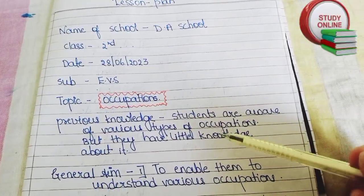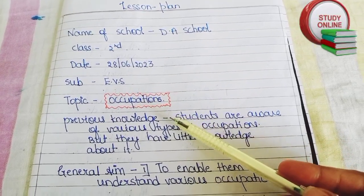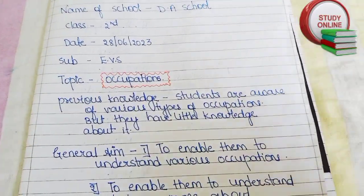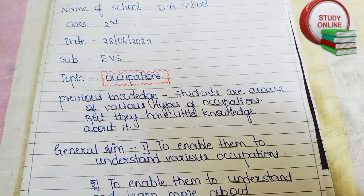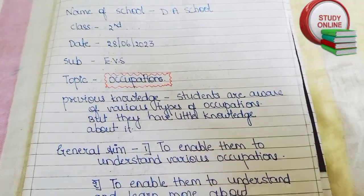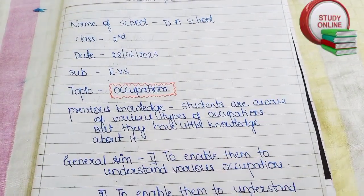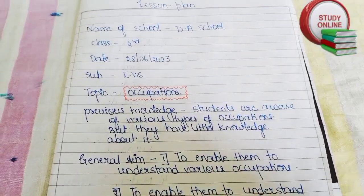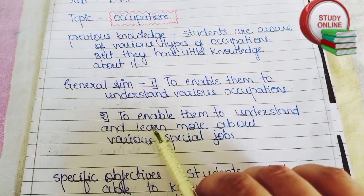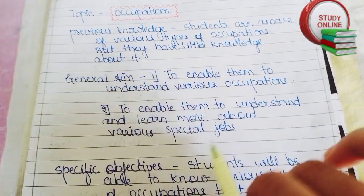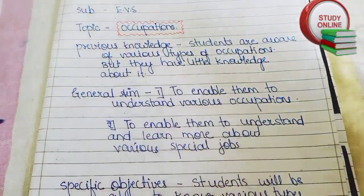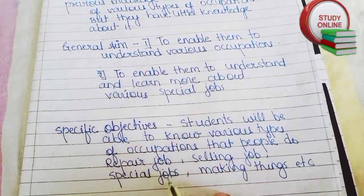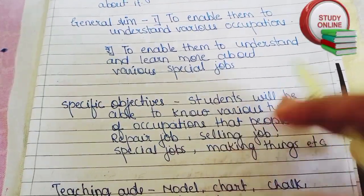Now let's see how to make this lesson plan. The topic is occupations. For previous knowledge, we have to write what students are already aware of — they are a little bit aware of various types of occupations that are common, like doctor and teacher. For general aim, you can write something like: to enable them to understand various types of occupations.